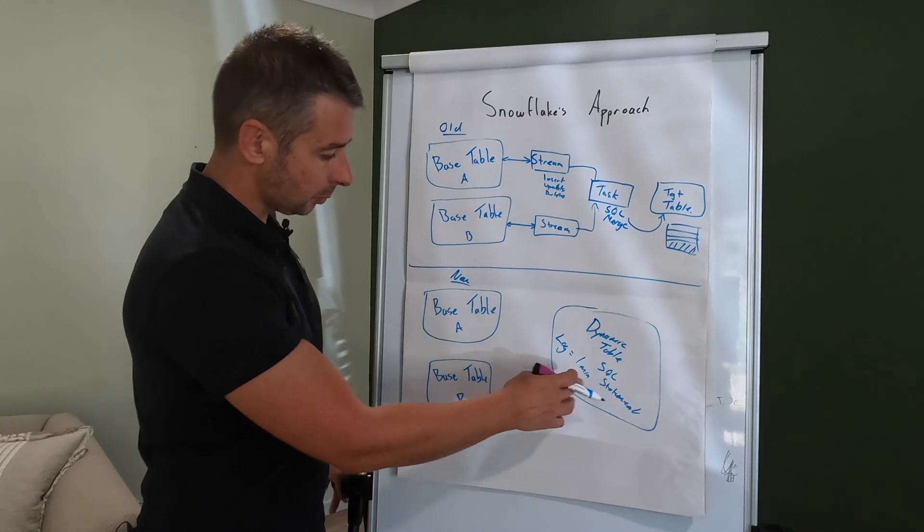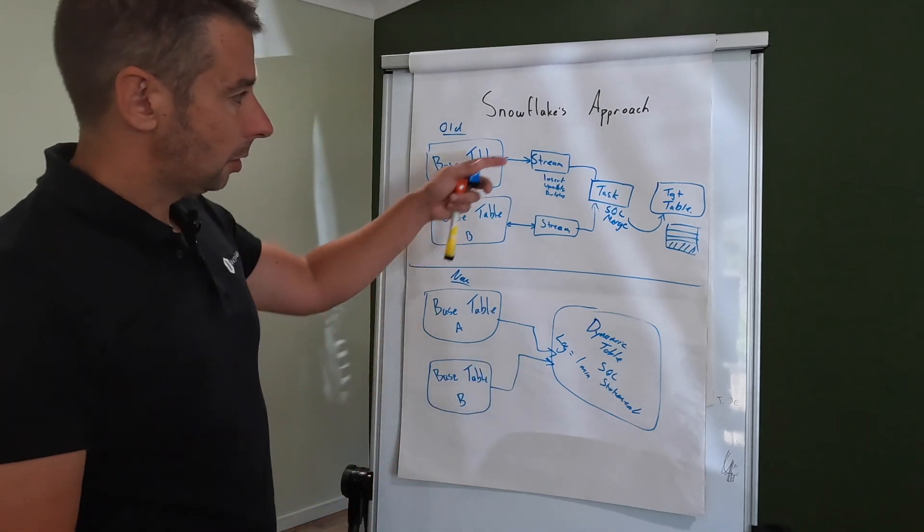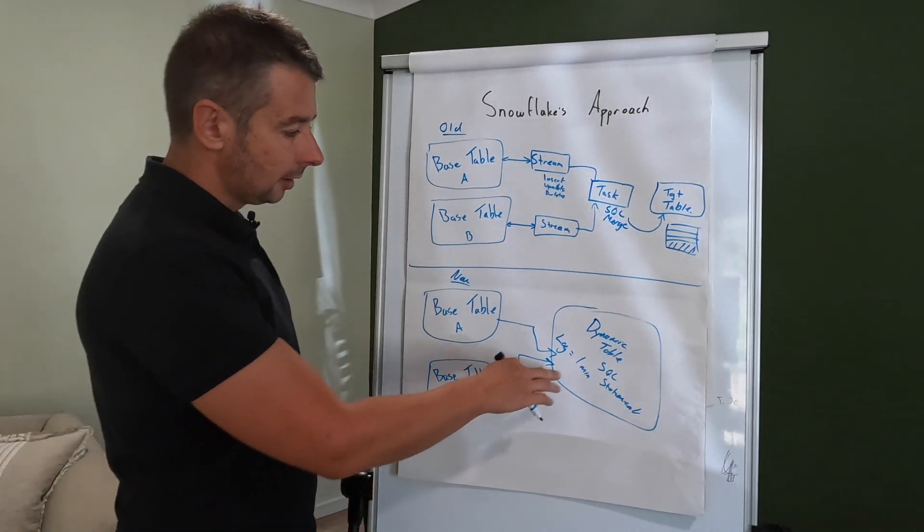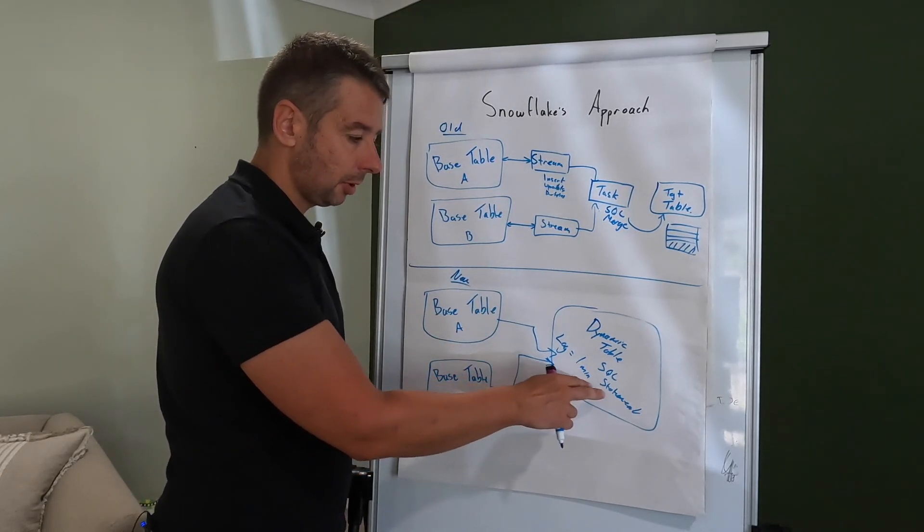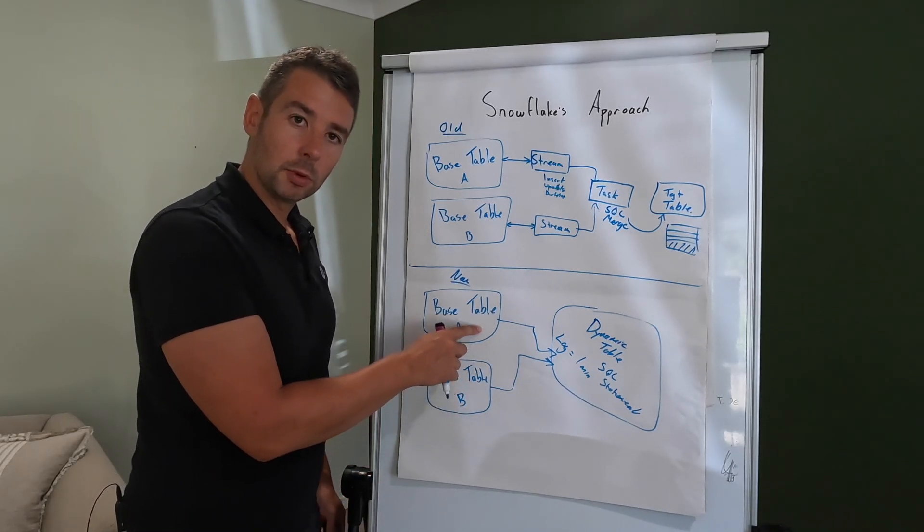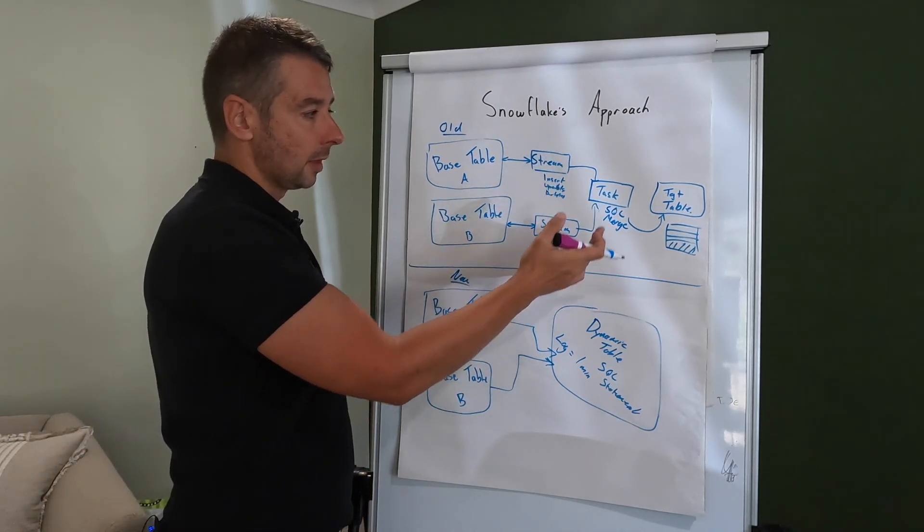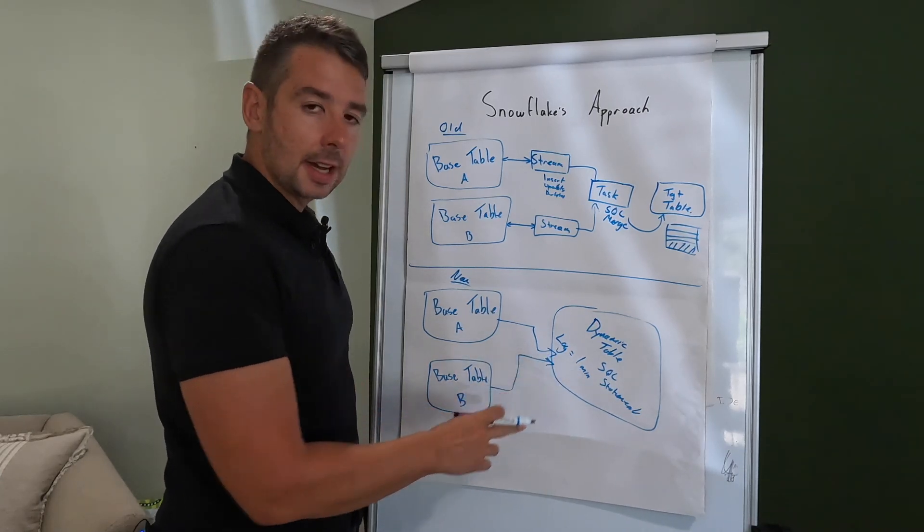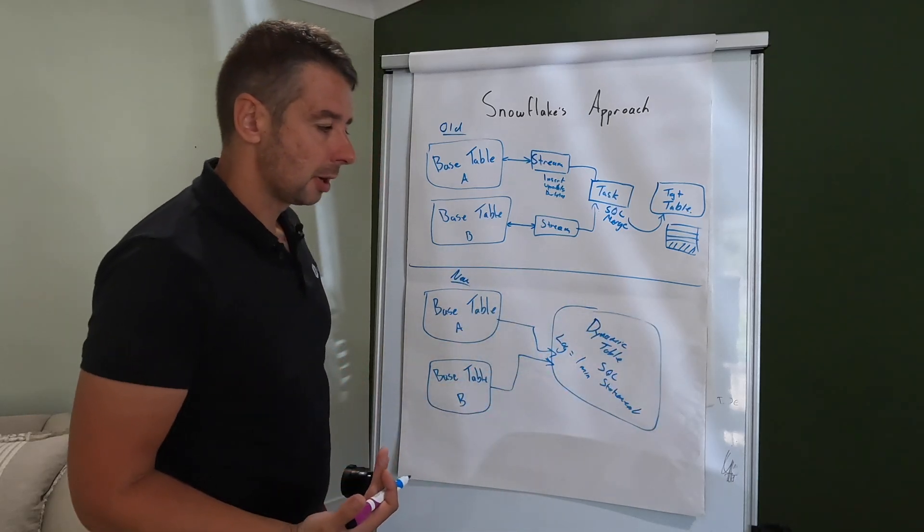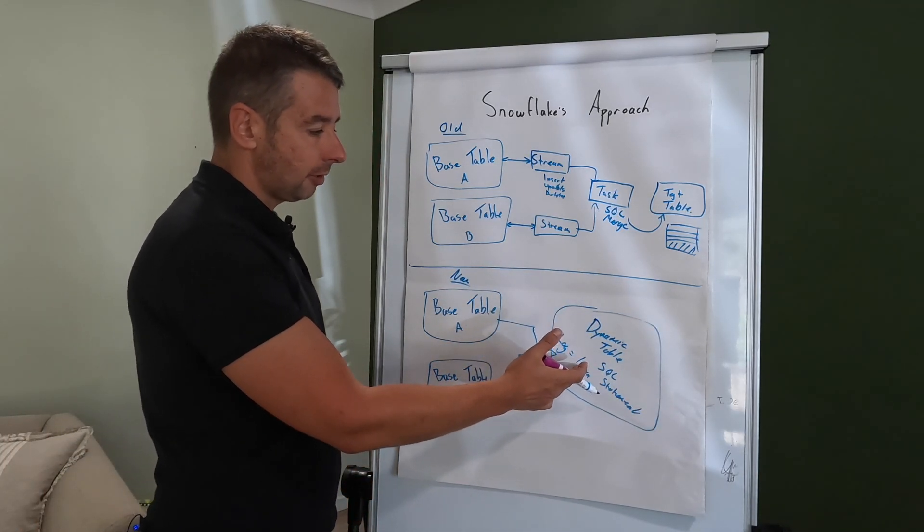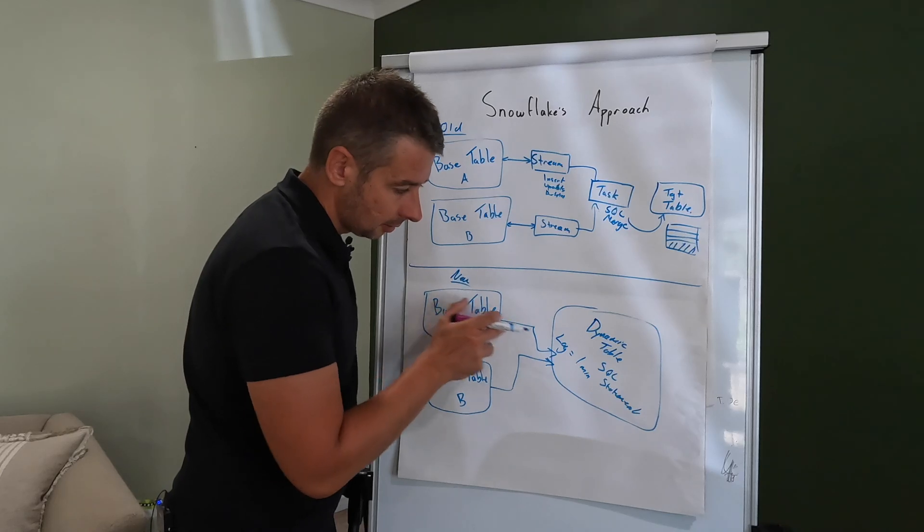So now we've got our changes coming into our base tables again, base table A and base table B. This time though all we need is our dynamic table and this is effectively a SQL statement and we specify a lag time which can go down to one minute. This SQL statement basically tells Snowflake what our target table structure needs to look like as well as joining data from these two tables together. Now notice that we don't need a stream anymore because the dynamic table in the background is automatically working out what's changed based upon the SQL statement it's got here. So if the underlying data has changed it will recognize that and just bring in the new data that's available.